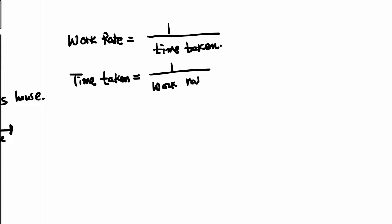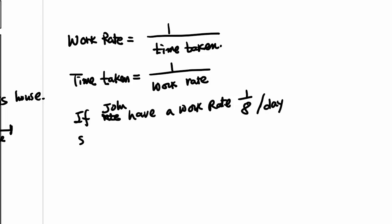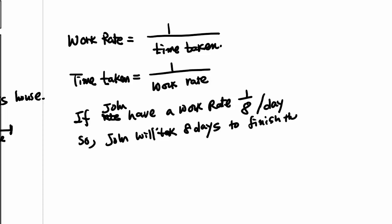If John has a work rate — you can see the rate per day — so John will take 8 days to finish the job, painting the house. It takes eight days.